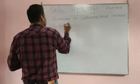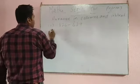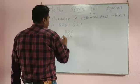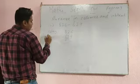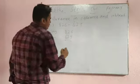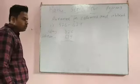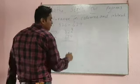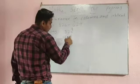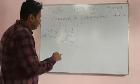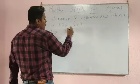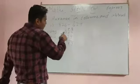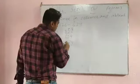826 minus 629. This is your question, this is solution. I have written solution. Now 16 minus 9 - you will not subtract 6 minus 9 directly. One carry will come, so 16 minus 9 is 7. It will become 1, 1 minus 2 cannot subtract, again you will take 1. It will become 11, 11 minus 2 is 9.